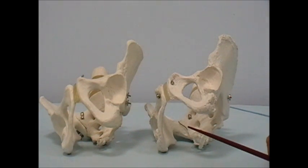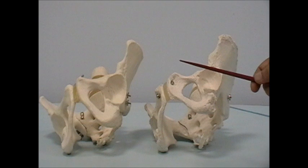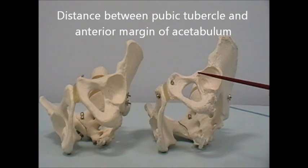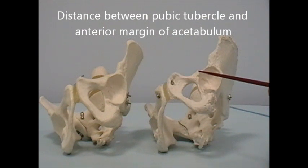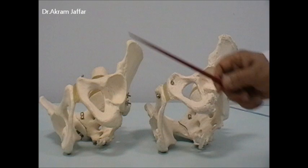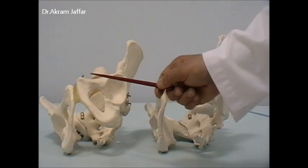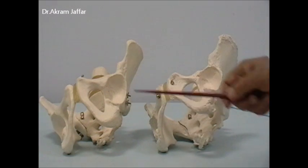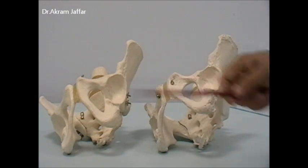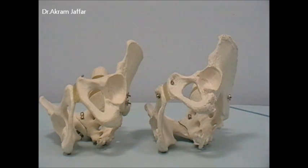An important feature is the distance between the pubic tubercle and the acetabular margin. In the wide female pelvis, this distance is wider than the width of the acetabulum. While in the male, because of its narrower pelvis, this distance is less than or almost equal to the width of the acetabulum.